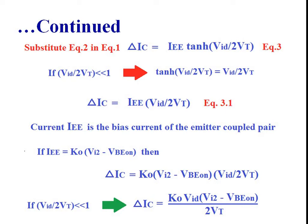Therefore, we can write delta IC is equal to IEE into VAD by 2VT, where IEE is the bias current of the emitter-coupled pair Q1 and Q2.